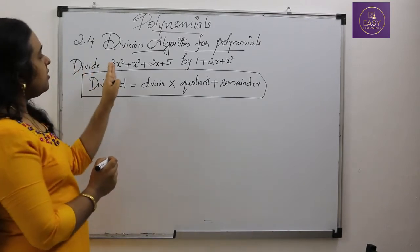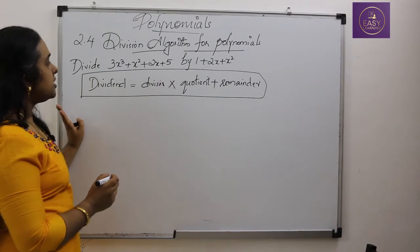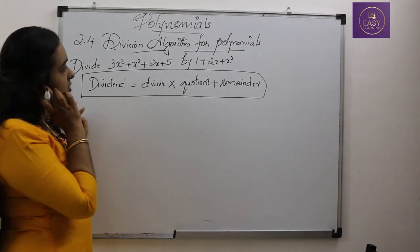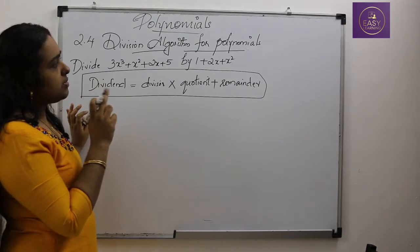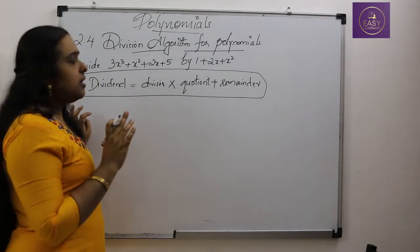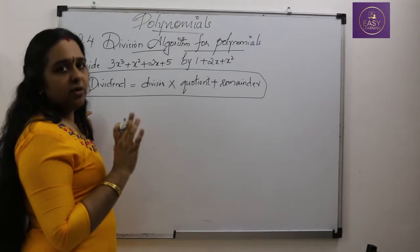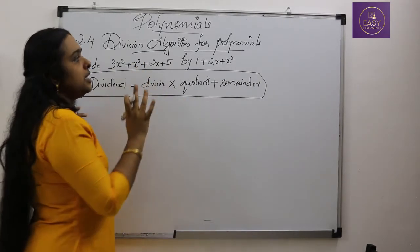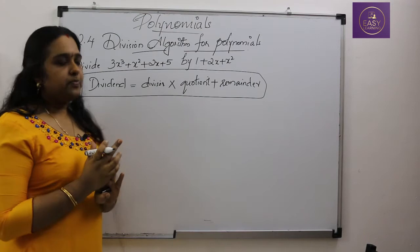Here we are given a cubic polynomial: 3x³ + x² + 2x + 5, and we have to divide it by 1 + 2x + x². This is not in general form, so the first thing you have to do is write the polynomials in general form.